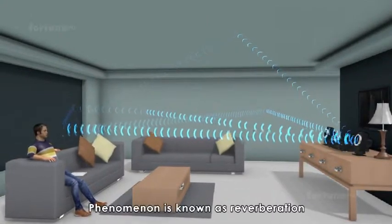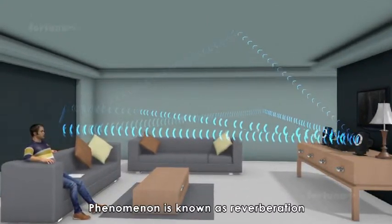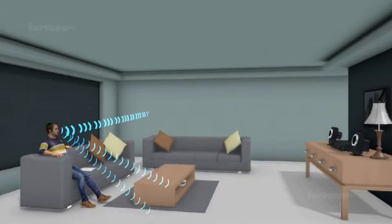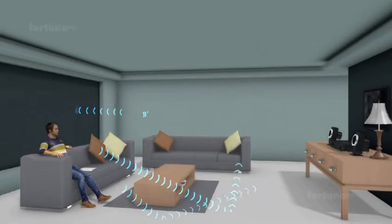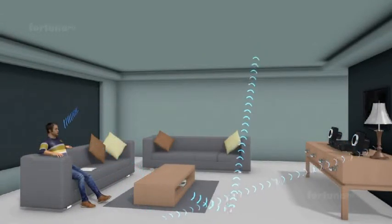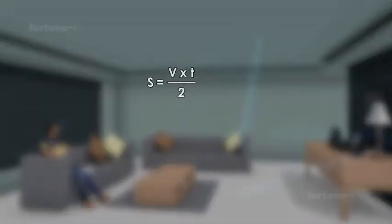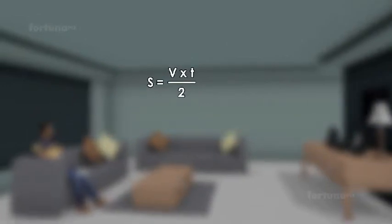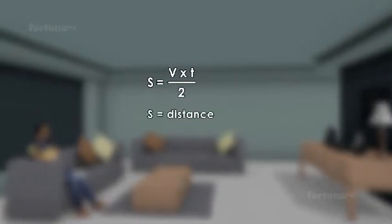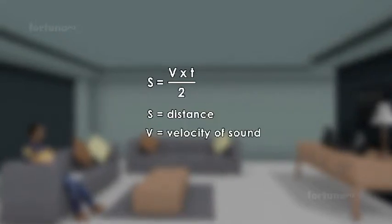Using echoes, we can calculate the distance between the source and reflection surface with the equation S equals V multiplied by T divided by 2, where S is the distance between the source and obstacle, V is the velocity of sound medium, and T is the time interval between direct and reflected sound.